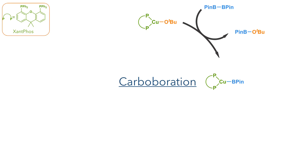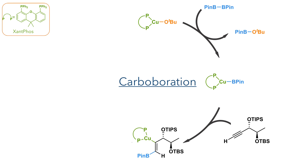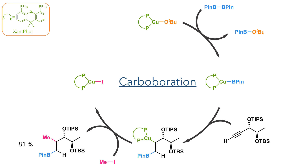With these protecting groups in place, the alkyne could then be subjected to a carboboration reaction. A copper complex formed with the Xantphos ligand and tert-butoxide first reacts with bis(pinacolato)diboron to generate a copper borane species. This adds across the alkyne with the borane adding to the terminal end. This intermediate then reacts with methyl iodide, with the methyl group taking the place of the copper, to form the product in an 81% yield. The resulting copper iodide species reacts with sodium tert-butoxide to eliminate sodium iodide and regenerate the active catalyst.